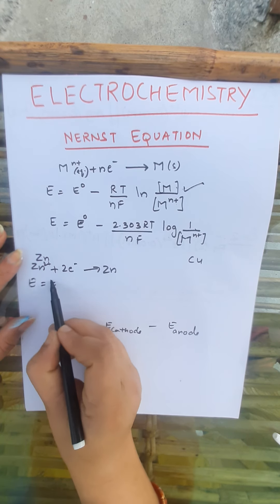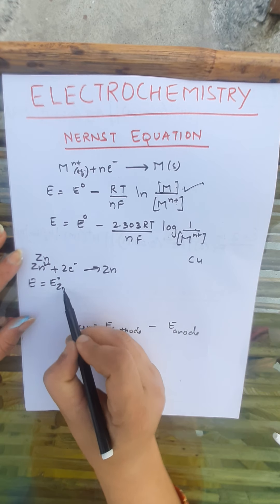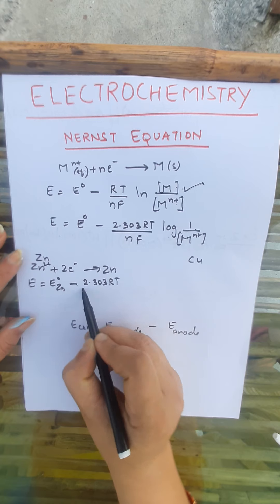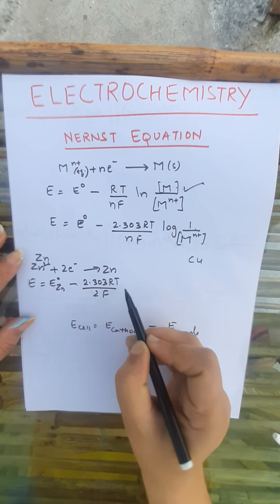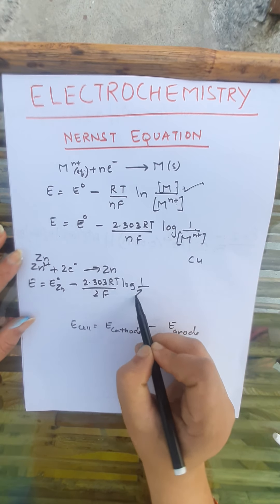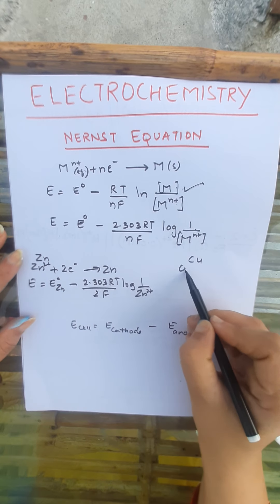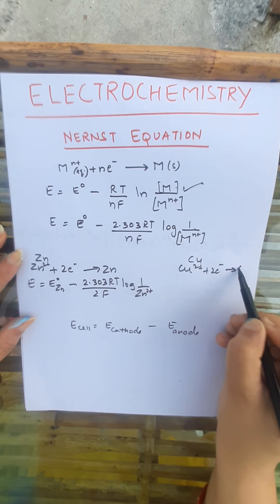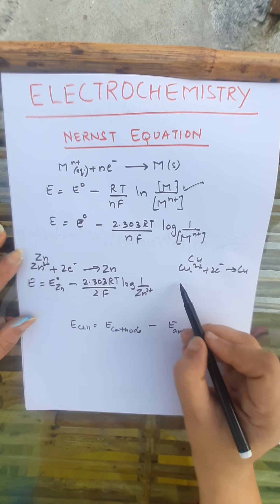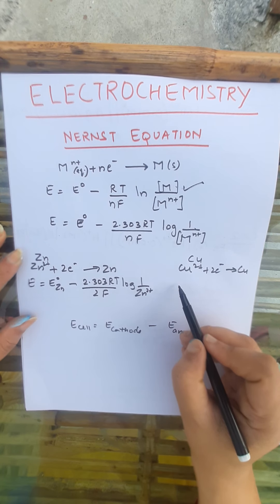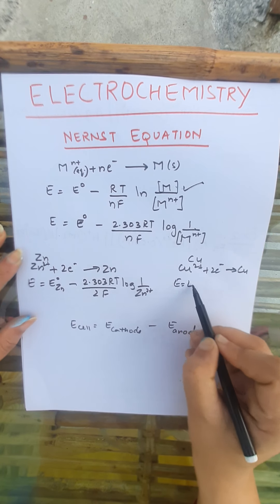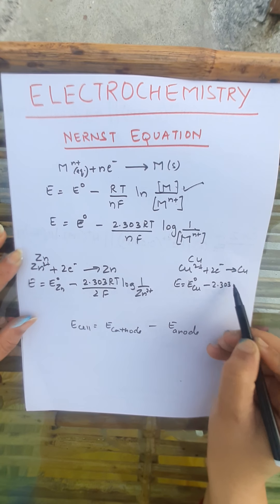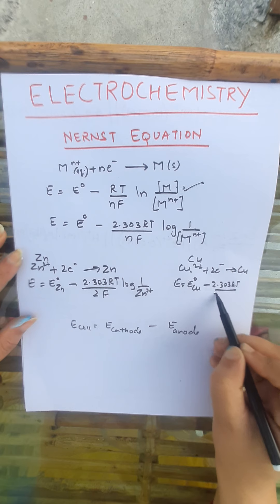The 1 in the numerator is for solid M. We can write this for two electrodes — one is the zinc electrode and the other is copper. For zinc, the equation is: E = E°(Zn) minus 2.303RT/2F times log(1/[Zn²⁺]).